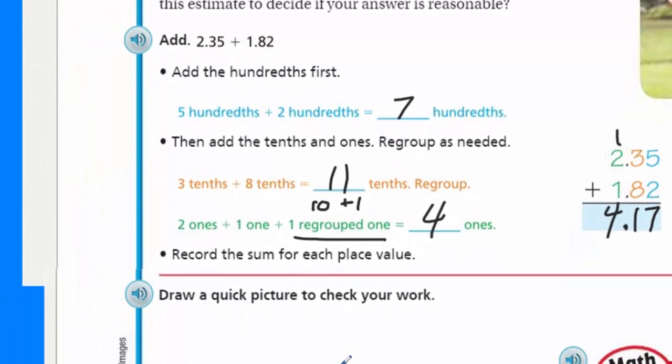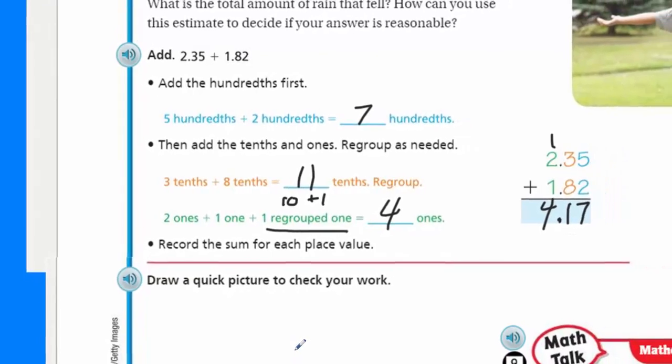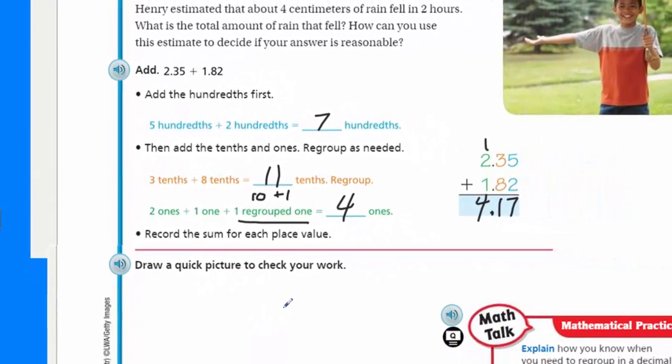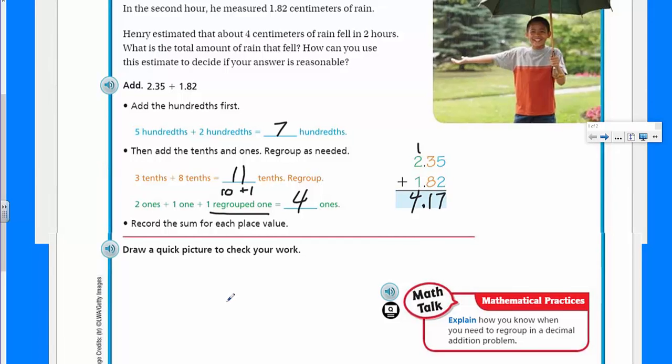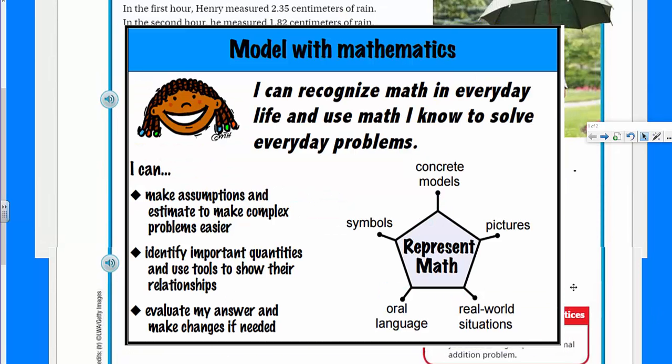Record the sum for each place value. So five plus two was seven. This here is eleven. Remember the decimal? Bring it on down. That's right. We need to bring that down. Yes. And then I'm going to carry my one, that one group that we created, that new whole. And now we have four. Okay, and then that makes sense because it's one tenth of that over, meaning that we have 4.17. Now, let's just draw a quick picture to check your work.